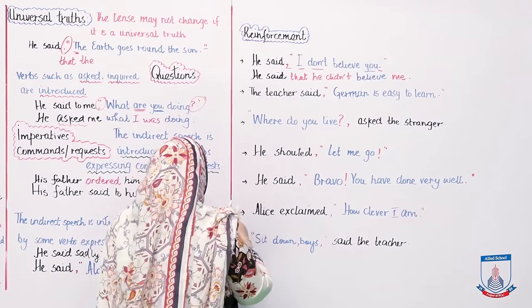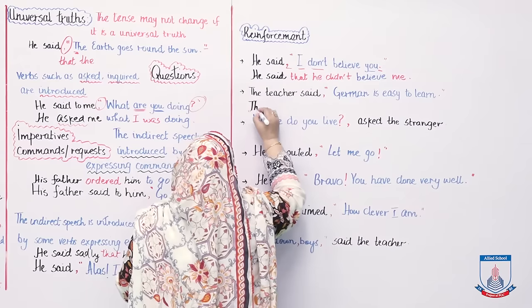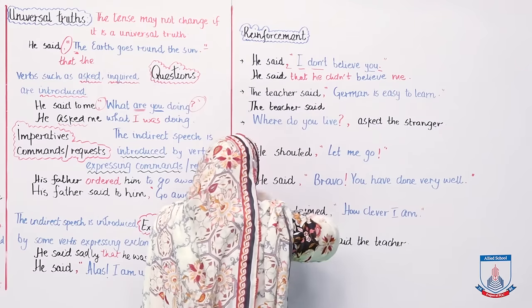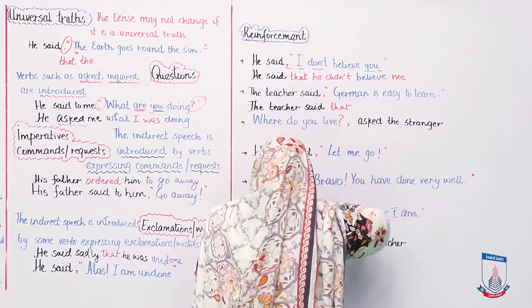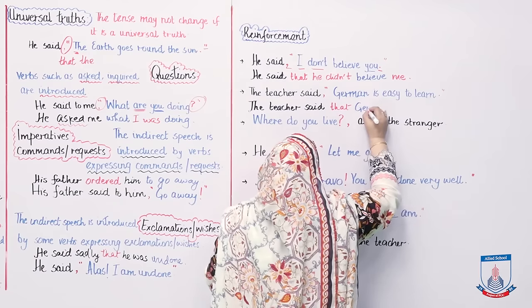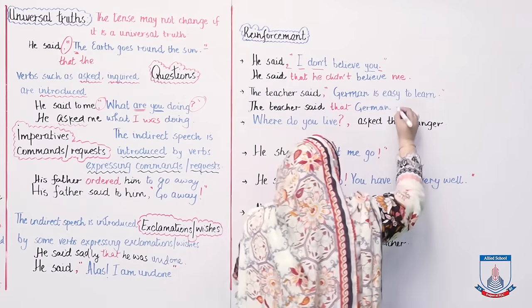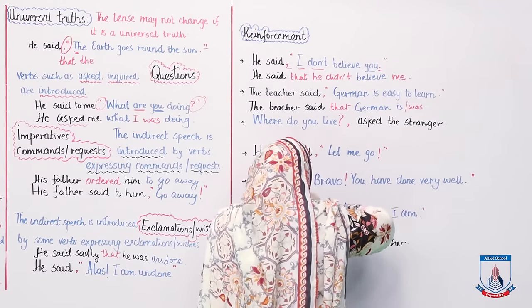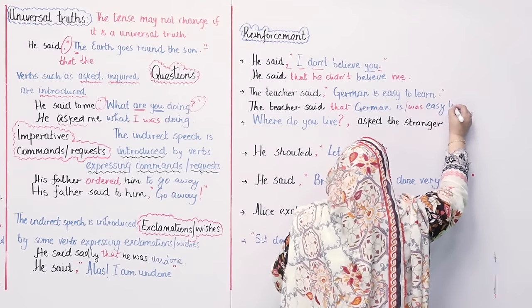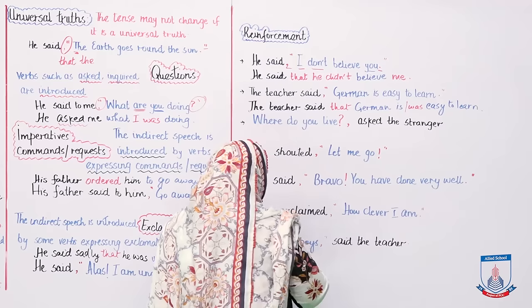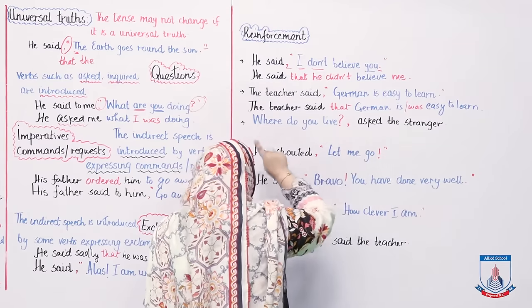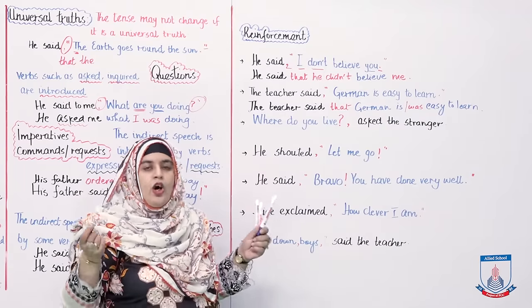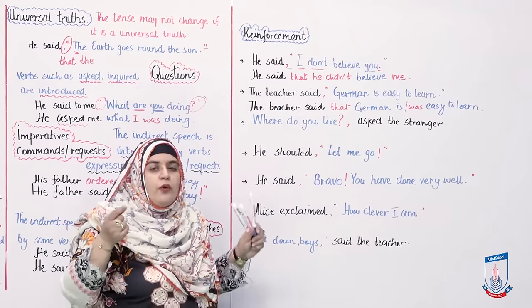Next: The teacher said, 'German is easy to learn.' This can be used in both ways. We can take it as a universal truth, or as an opinion. So: The teacher said that German is easy to learn — treating it as universal truth. Or: The teacher said that German was easy to learn — treating it as the teacher's specific opinion. Both are correct. If 'is' is used, it's a universal truth; if 'was' is used, it's the teacher's specific opinion.